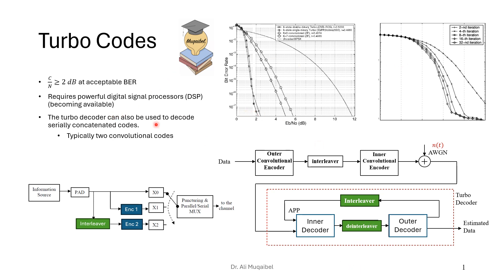Of course, this decoding requires a powerful digital signal processor. But these days we have lots of resources in a mobile phone or small system because of advances in digital signal processing. The turbo decoder can also be used for other decoding principles — to decode serially concatenated codes. So the turbo decoding principle can be applied to other convolutional codes as shown with the encoder and decoder.